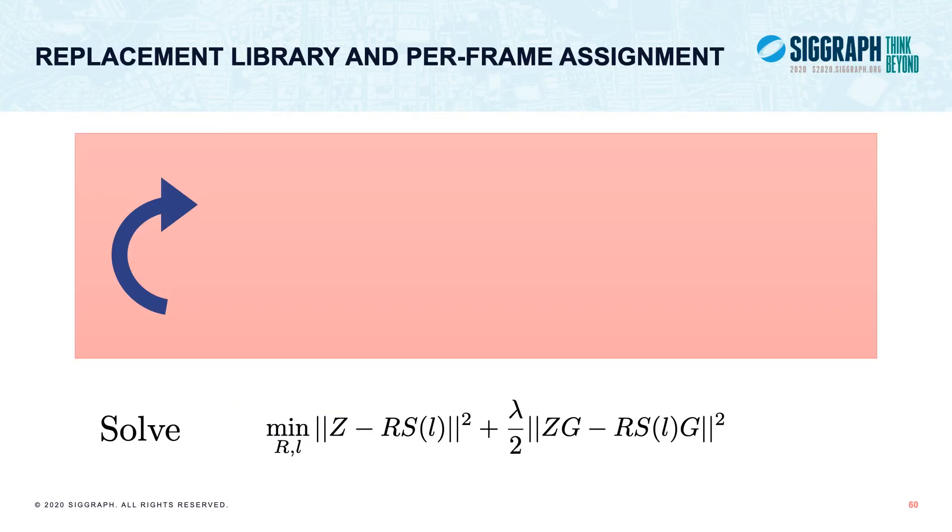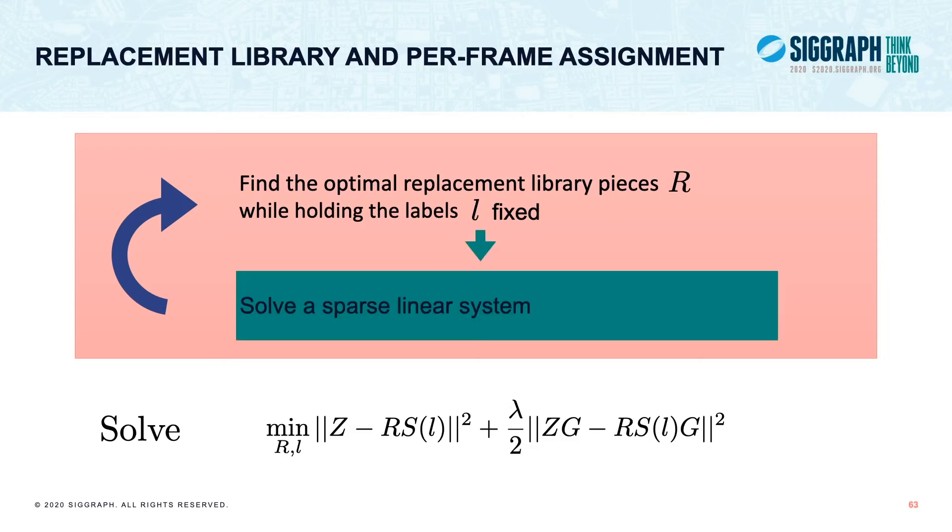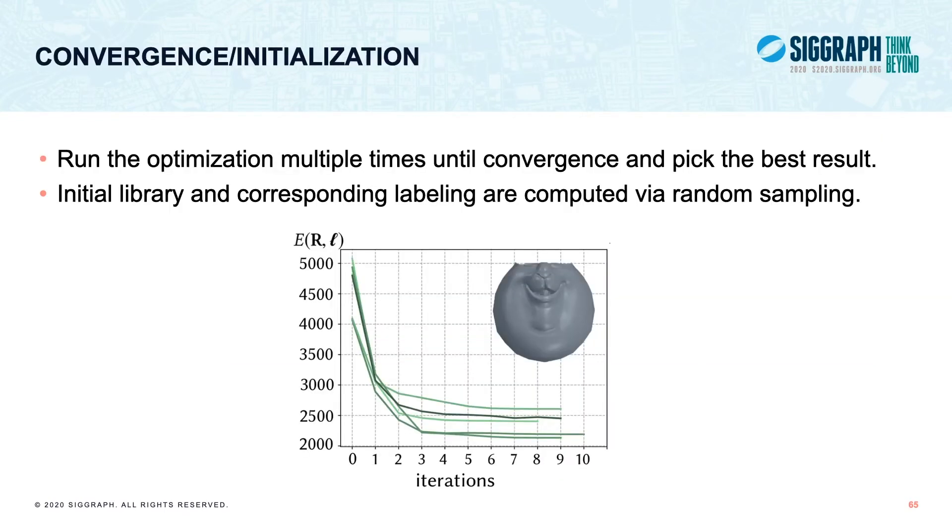To solve this optimization problem, we iteratively alternate between finding the optimal replacement library pieces while holding the labels fixed and finding the optimal labels while holding the library fixed. Finding the optimal library is simple and it ends up being a solution to a large sparse linear system of equations. Finding the library R and optimizing for labels L is more complicated, but no less well-posed. We may rewrite our original objective function as a sum of unary terms and binary terms. This again is solved using graph cuts. Our optimization deterministically finds a local minimum given an initial guess. We also run multiple instances of our algorithm with random initial assignments and keep the best solution.